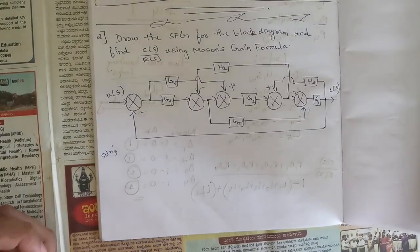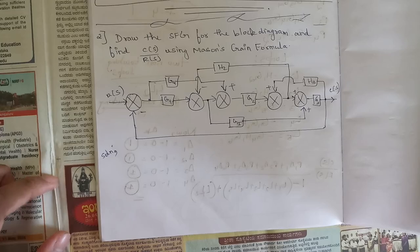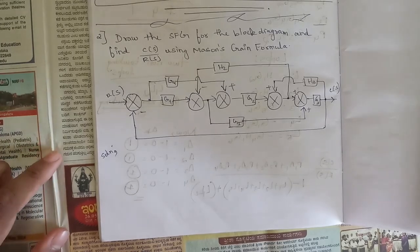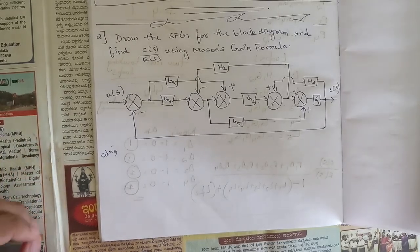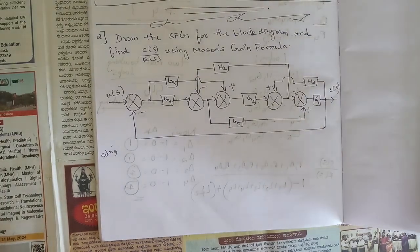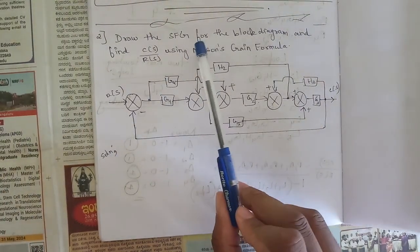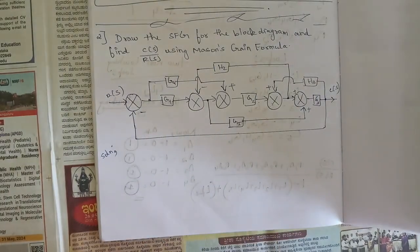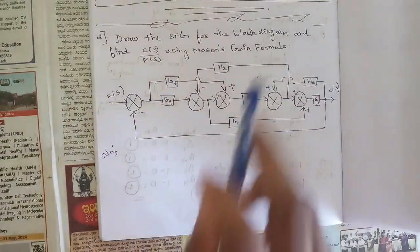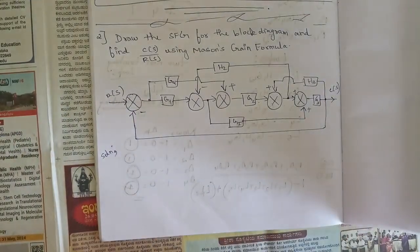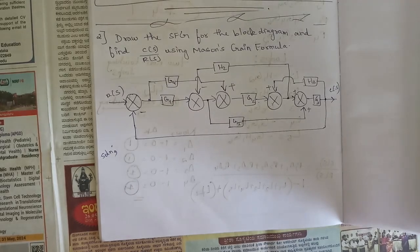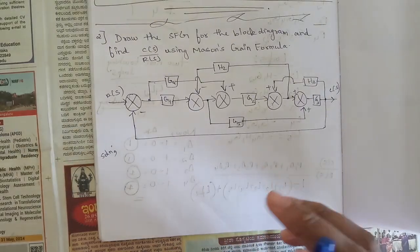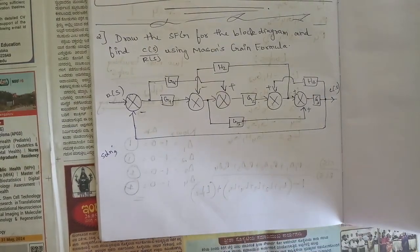Hello everyone, welcome to this session of Control Systems. We are continuing with the problems of signal flow graph. This is the second question: draw the signal flow graph for the block diagram and find the transfer function C(s)/R(s) using Mason's gain formula. For this we need to draw the signal flow graph first, and then identify the forward paths, loop gains, non-touching loops, and finally find the transfer function.